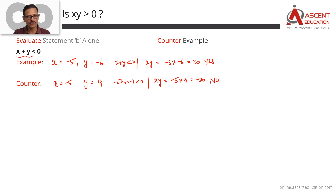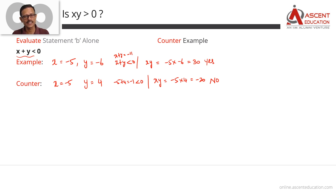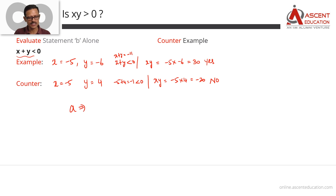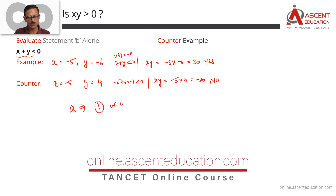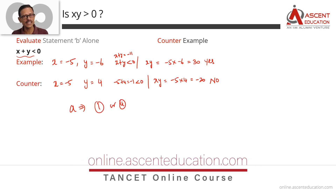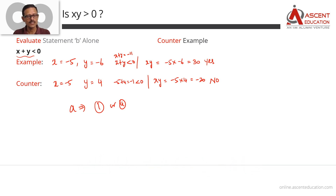So in the two cases, we have X plus Y being negative in both. In one case the product XY ended up being positive, and in another case the product XY ended up being negative. So Statement B has not given us a definite answer — sometimes yes, sometimes no — therefore Statement B is not sufficient.